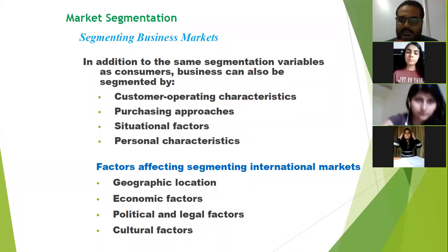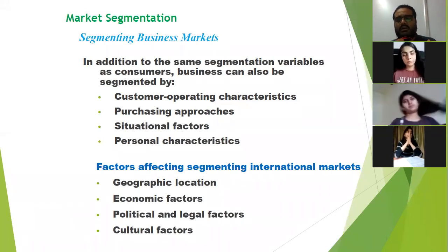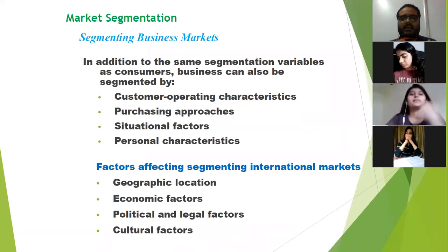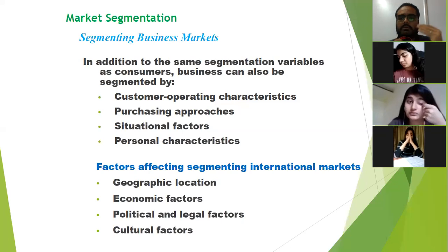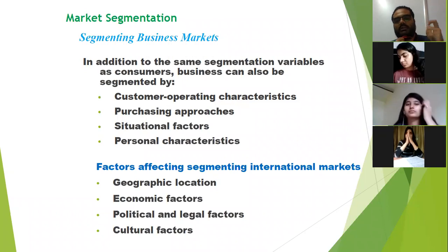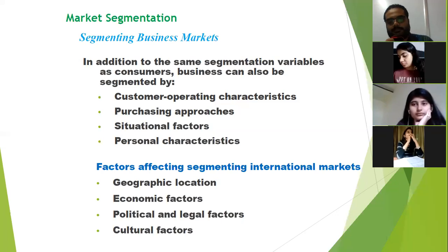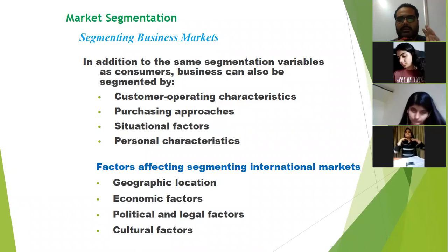There are certain characteristics or factors that you can use to particularly segment business markets. These factors include: customer operating characteristics — what is the buying behavior of the customer, the purchasing power parity, the income level of the consumer, whether there is a particular season in which the customer buys more or less of a good, and what is the thought process of the customer. Similarly, you have to see the purchasing approaches and the situational factors.